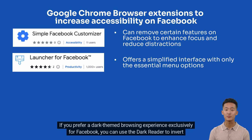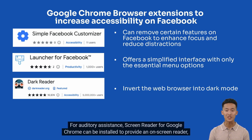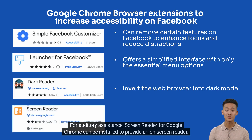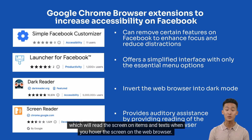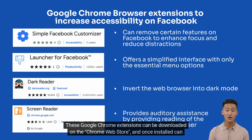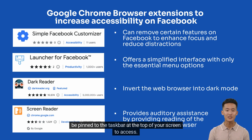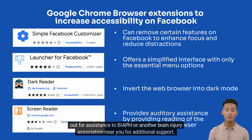If you prefer a dark-themed browsing experience exclusively for Facebook, you can use the Dark Reader to invert the web browser into dark mode. For auditory assistance, Screen Reader for Google Chrome can be installed to provide an on-screen reader, which will read the screen items and text when you hover over them in the web browser. These Google Chrome extensions can be downloaded on the Chrome Web Store, and once installed can be pinned to the taskbar at the top of your screen. This video will not go over in-depth how to use each extension; however, if you wish to learn more, reach out for assistance to BIAF or another brain injury association near you for additional support.